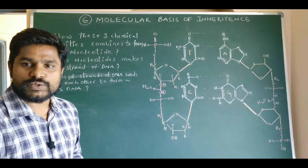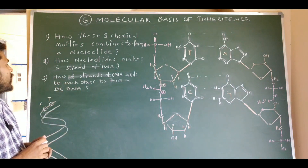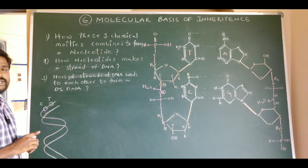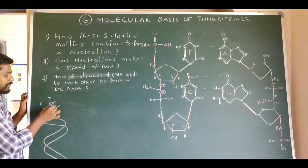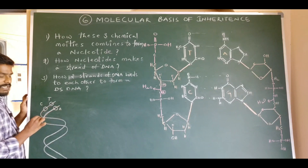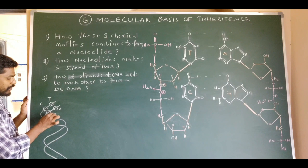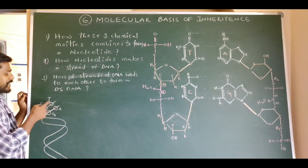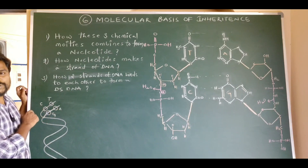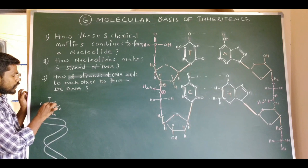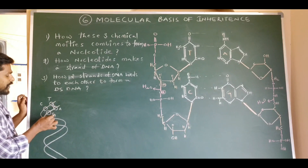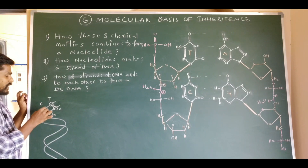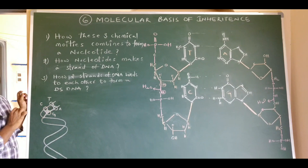Now for the third question: how do two strands of DNA bind to each other to form a complete double-stranded DNA molecule? According to the rule of complementarity, a purine adenine always pairs with a pyrimidine thymine of the opposite strand by means of two hydrogen bonds. Likewise, a purine guanine always pairs with a pyrimidine cytosine of the opposite strand by means of three hydrogen bonds.